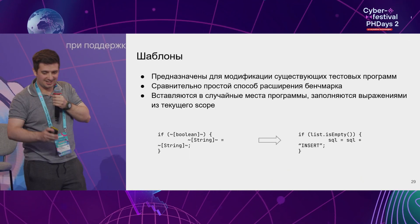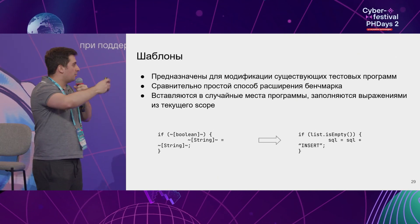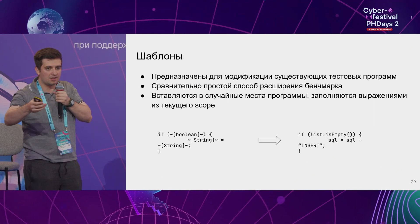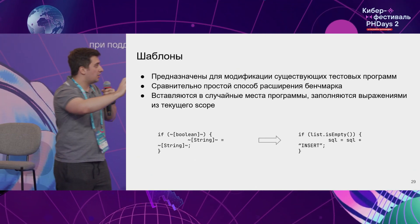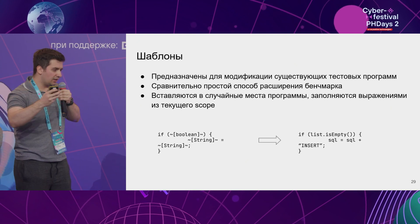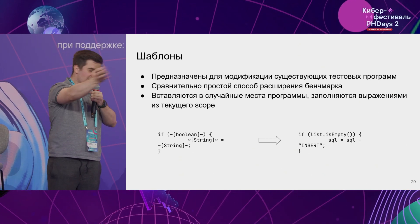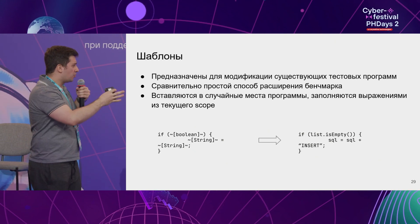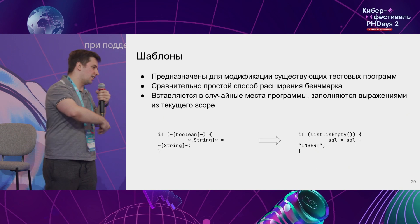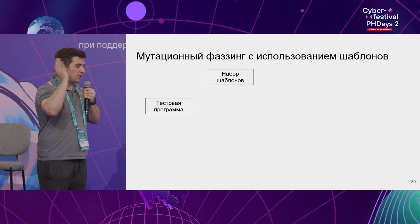Templates are pre-configured structures which are added to a random point in the test software. A key feature is the type-based cells — seen on the left-hand side of the slide — which are then filled with information about variables and expressions available in the scope where this template is inserted. This is a pretty simple way to ensure a variety of language-based features, uncover and detect specific behavior, and make this a very cool syntax-based benchmark.